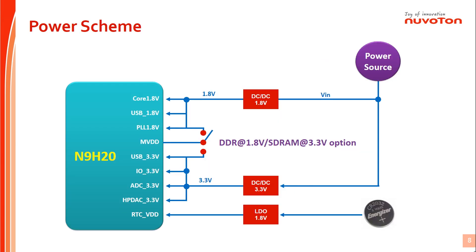Let's take a look at the N9H20 series power scheme. N9H20 series provides an independent power rail of 1.8V for RTC to keep calendar time, with the chip powered by 1.8V for core logic and 3.3V for I/O. It is better to use a DC-to-DC power IC to get optimum power consumption.